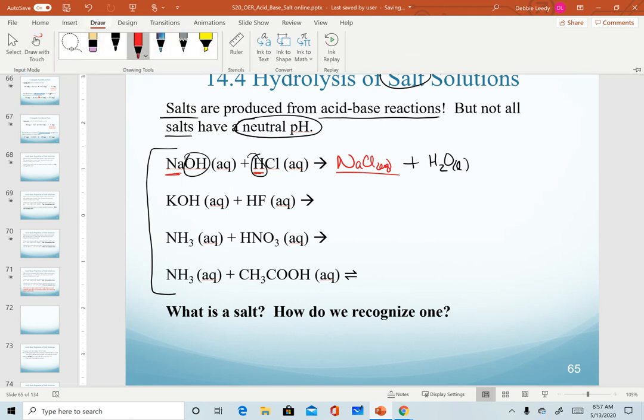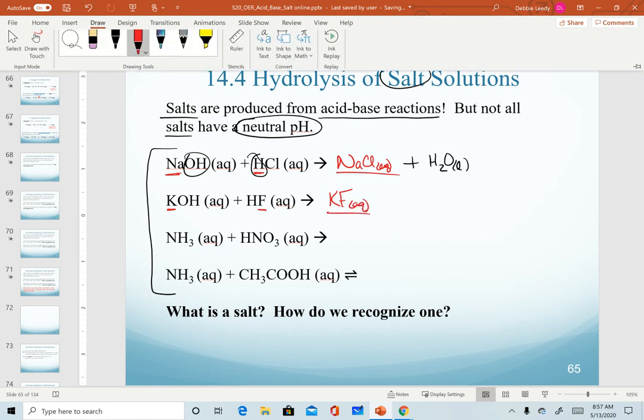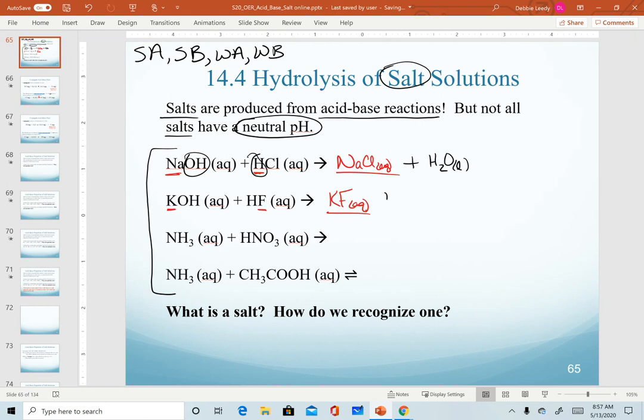In our second example, the salt that we form will be from the combination of the cation in KOH with the anion in HF. So our salt will be KF. Again, we do form water as the product here.